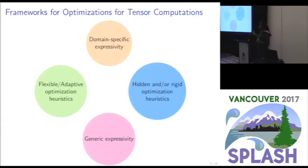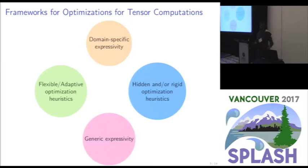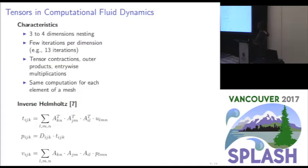Because of that, and the kind of intensively computing applications that we have, several types of tools have been developed, addressing different aspects. Some are quite generic in terms of expressivity, and others are much more domain-specific. On the aspect of optimization heuristics, the tools vary depending on whether the heuristics are completely hidden from the user or much more adaptive and flexible.